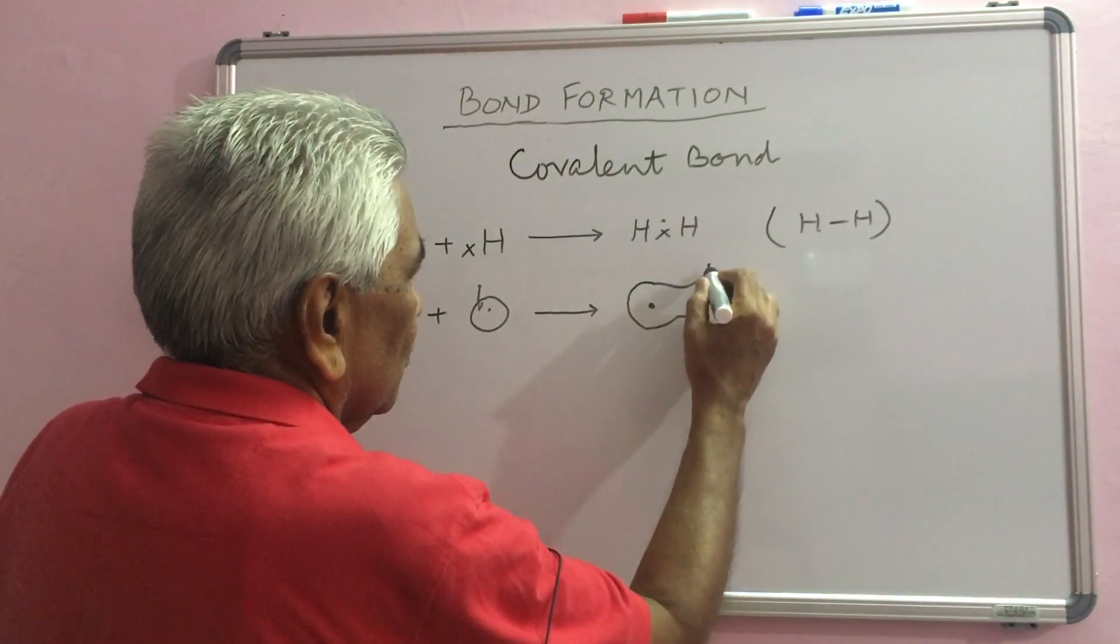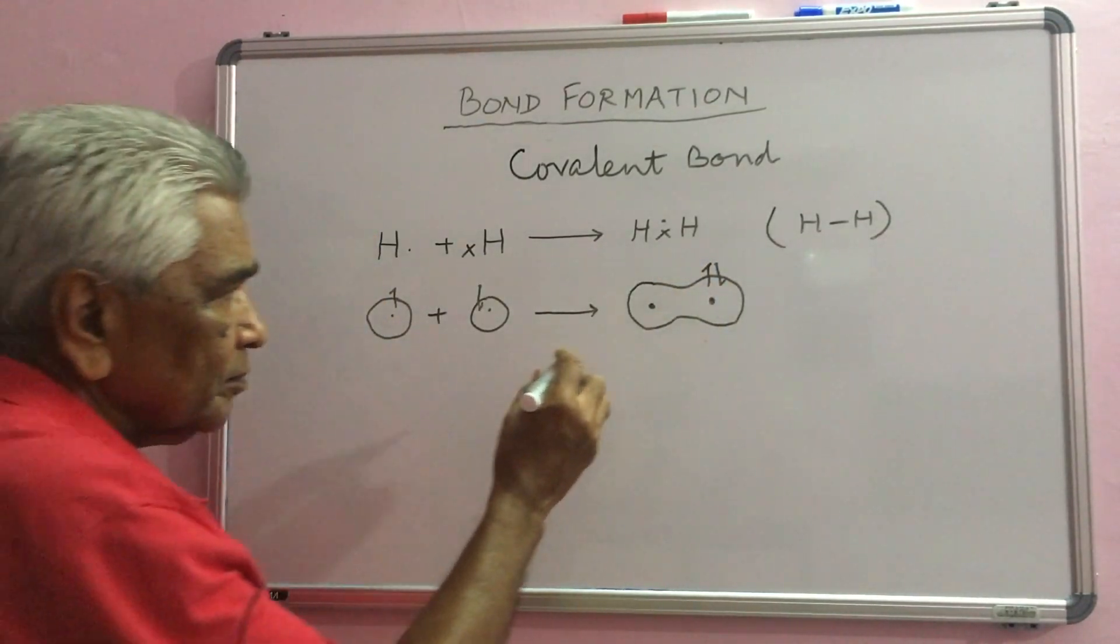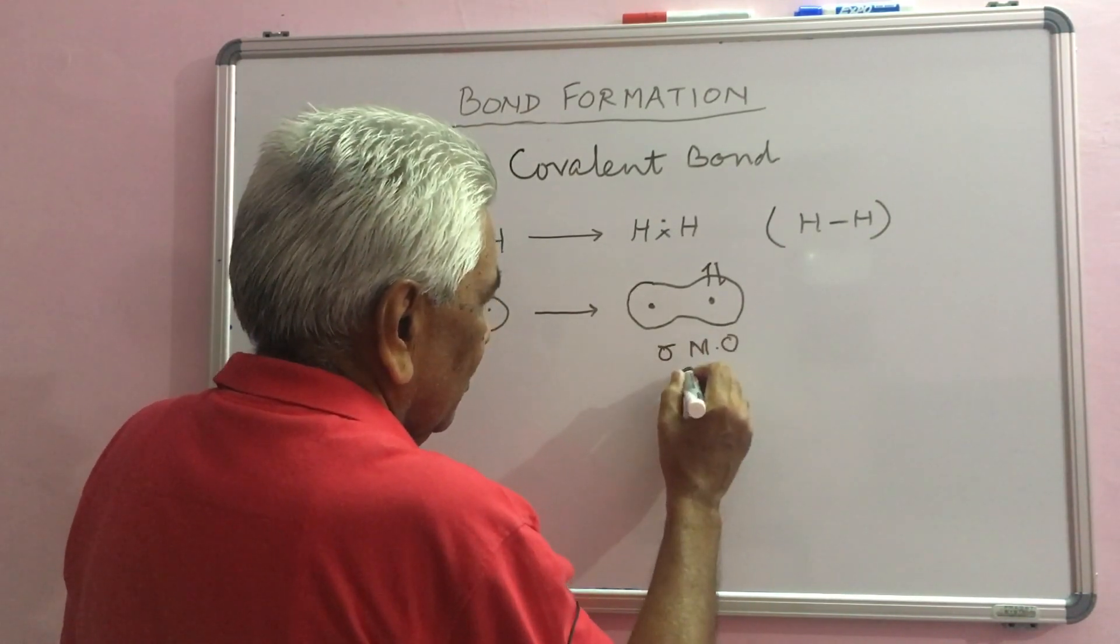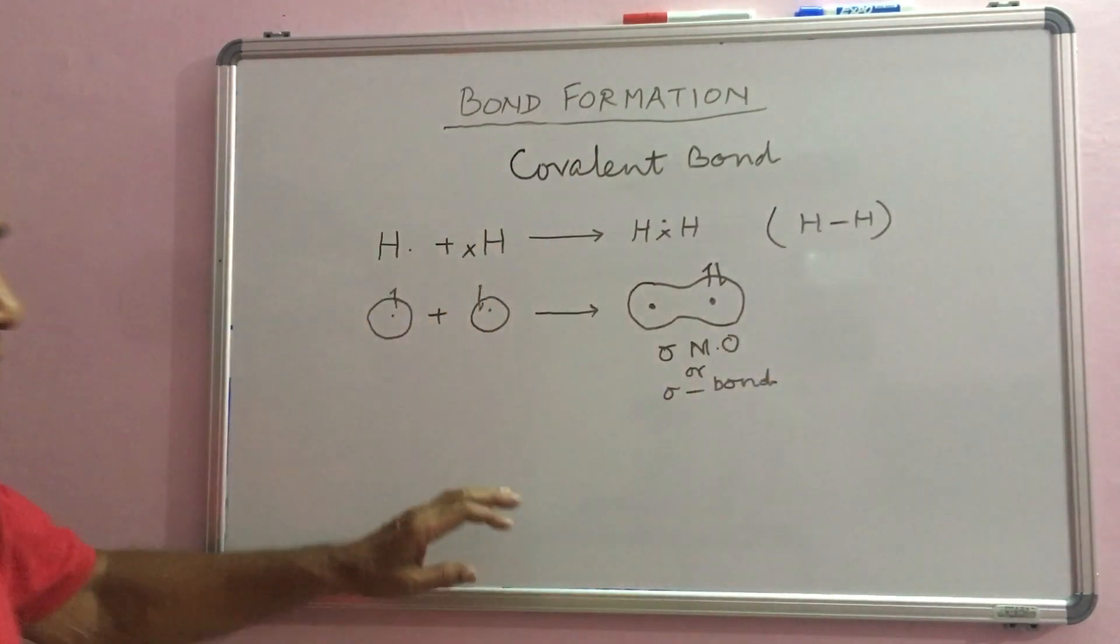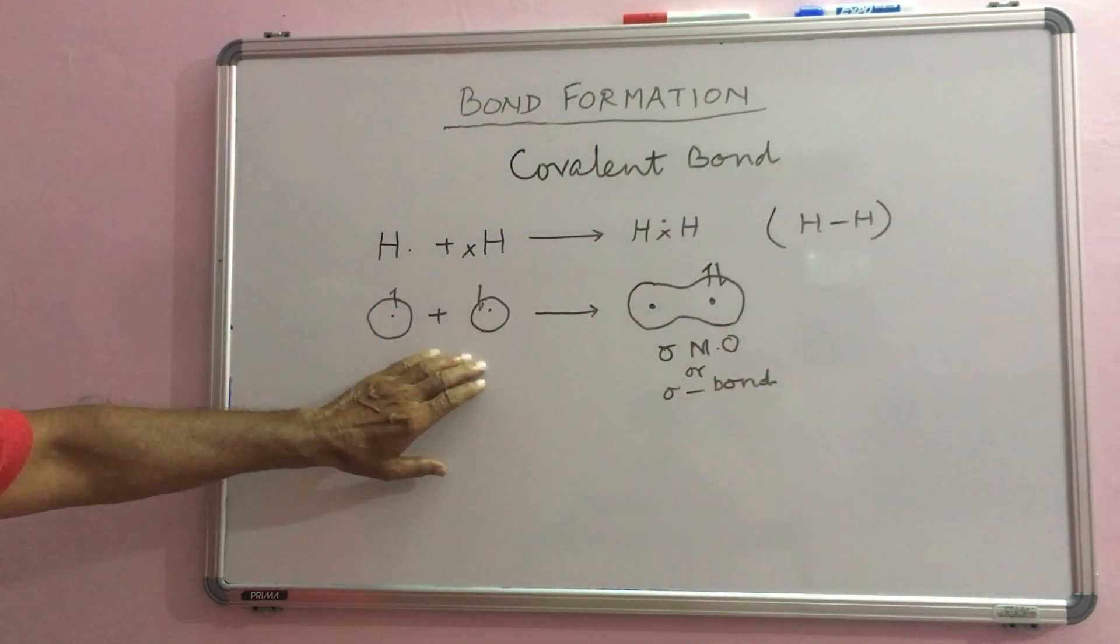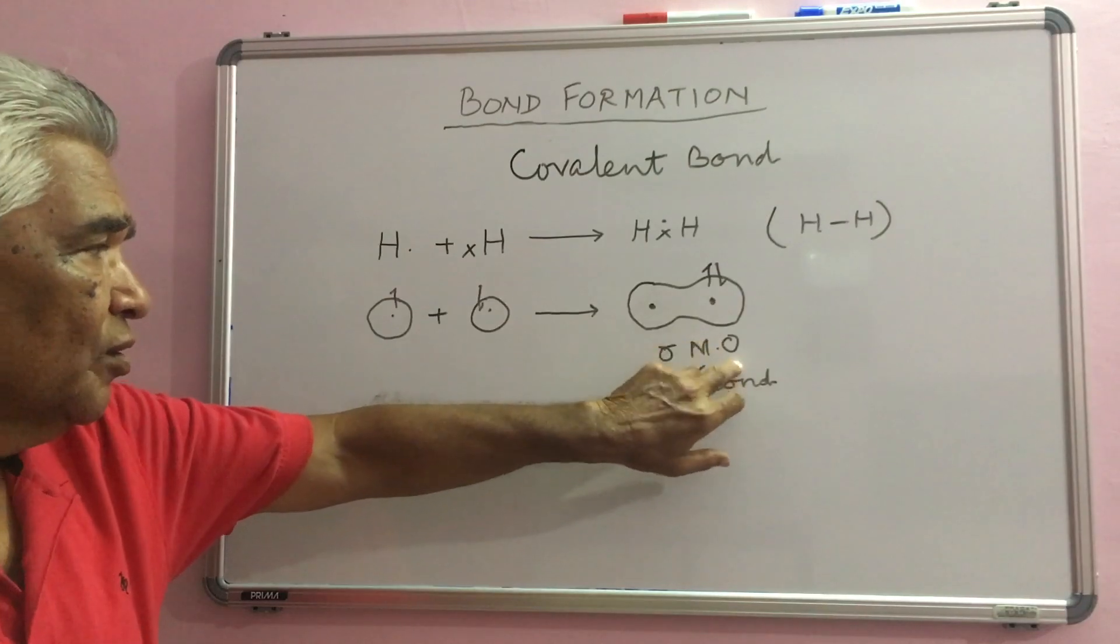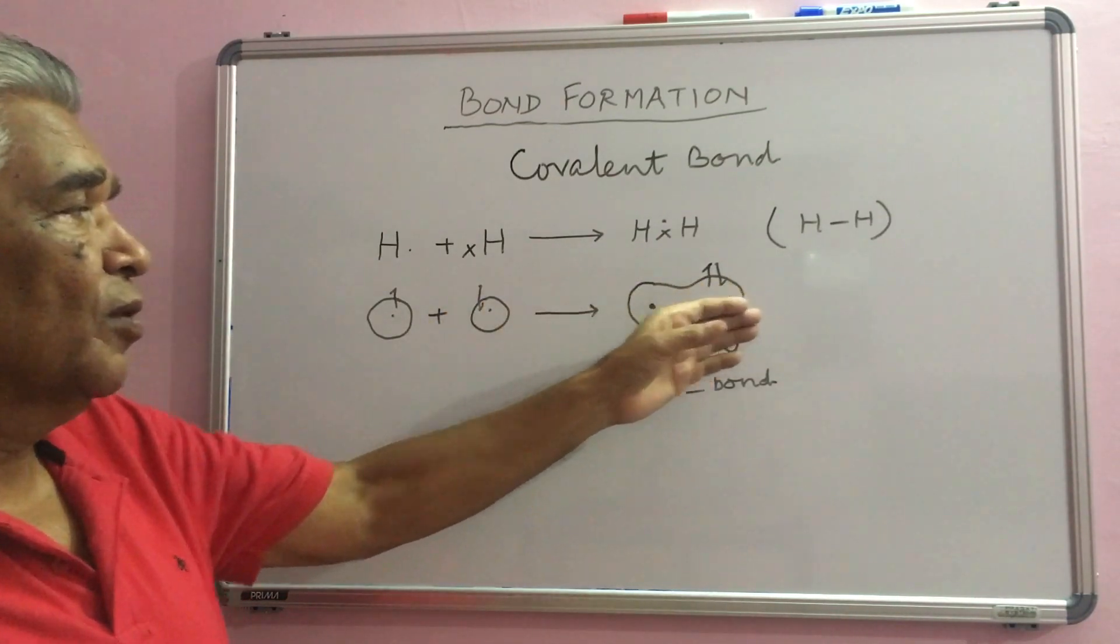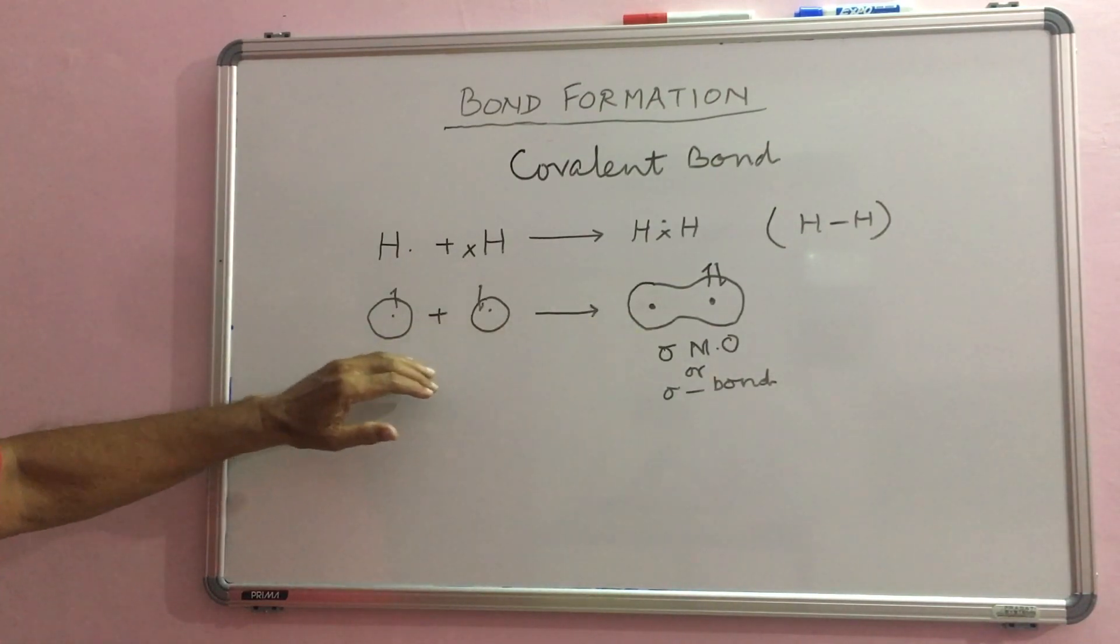This has now two electrons revolving around the two nuclei. This is known as sigma molecular orbital or simply sigma bond. Energy of a molecular orbital is lower than the sum of energy here. This is more stable than the hydrogen atoms. Hydrogen molecule is more stable than hydrogen atoms.